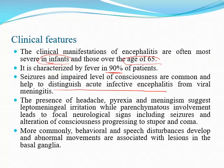Seizure and impairment of level of consciousness distinguish acute infective encephalitis from meningitis. The virus particularly affects the mesial temporal lobe and inferior and orbital frontal lobe, which is why patients usually present with seizure — the mesial temporal lobe is one of the most epileptogenic areas. This area is also responsible for memory, as the limbic system is there, and the orbitofrontal system is responsible for behavior.